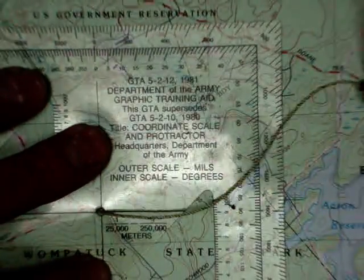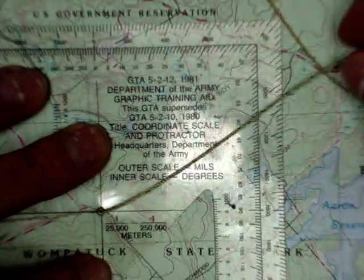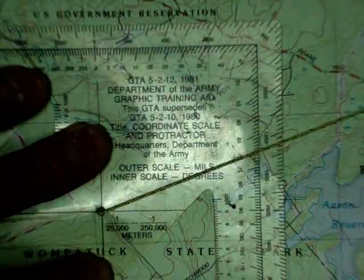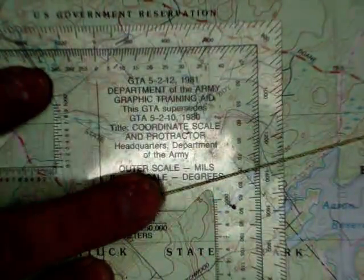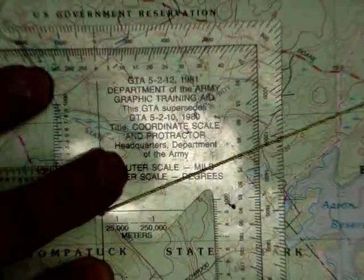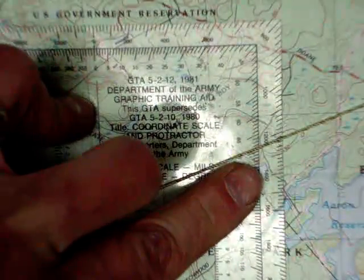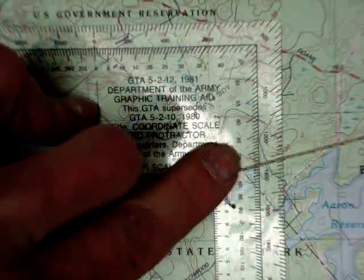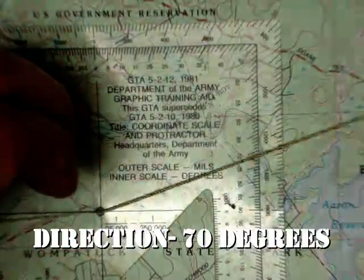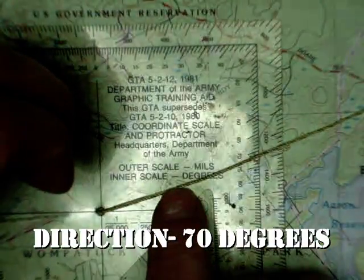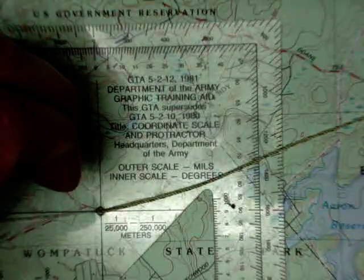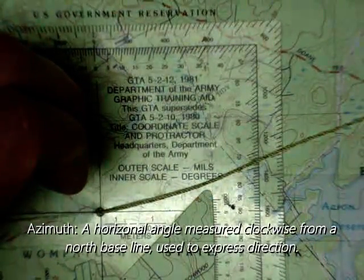Now with the string, there's our dot right there where we want to go. Put the string, I pull it, and I go to that dot and I can follow it to the degrees on the side here. And it says it's 70 degrees. So from here to there is 70 degrees. That is your plotted azimuth which will be your bearing on your compass.